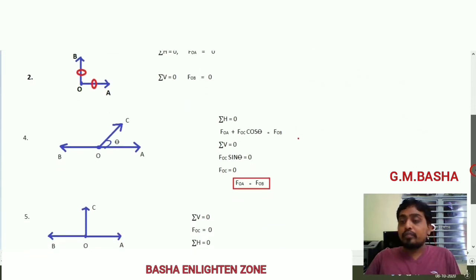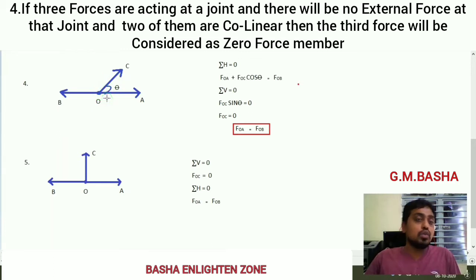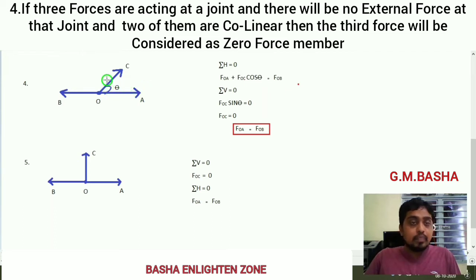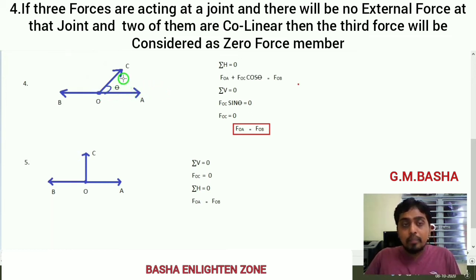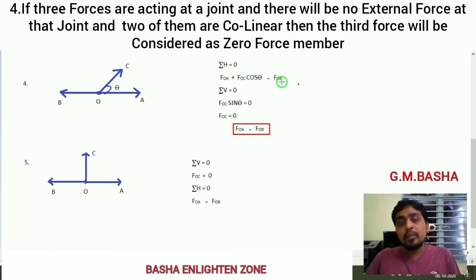Fourth point: if three forces are acting at a joint O, two of them are collinear to each other and the third one is non-collinear to these forces, then the third force must be equal to zero. If I am resolving horizontally — using cos theta for the inclined member OC — you get: force in OA plus force in OC times cos theta equal to force in OB (OB acts in the opposite direction). Rearranging: force in OA plus force in OC cos theta equals force in OB.